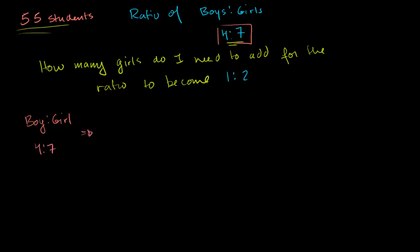That means, what does that mean? That means, for every, if you add up these two, for every 11 students, there are what? There are 4 boys and 7 girls. There are 4 boys and 7 girls.